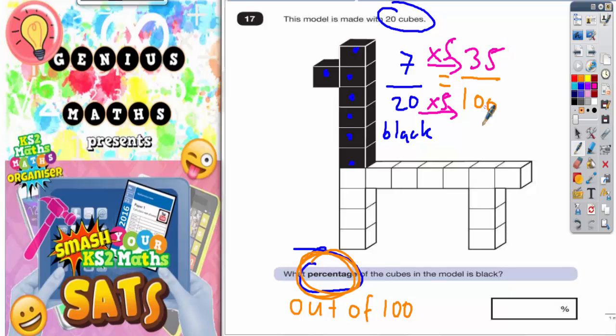Now we know it's 35 out of 100. It should be fairly straightforward because 35 out of 100 is 35%, and it's 35% you need to put in your answer.